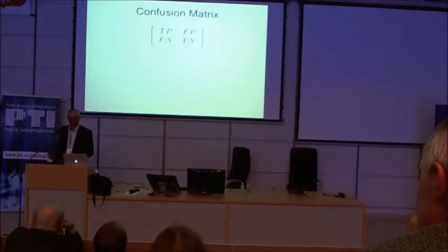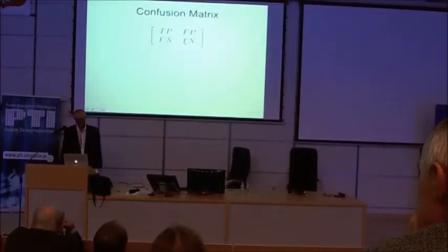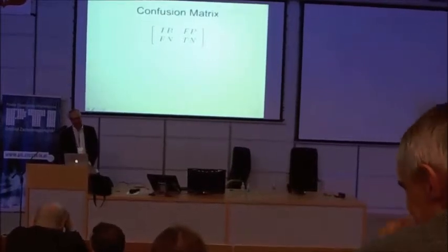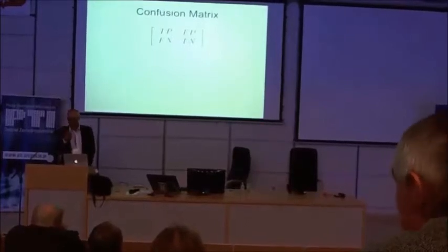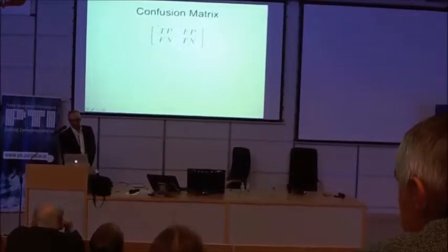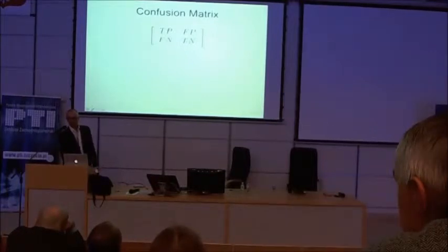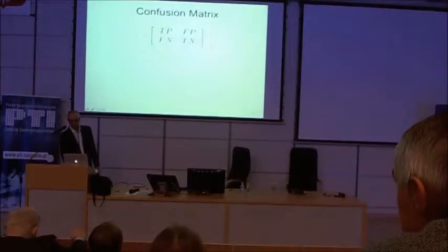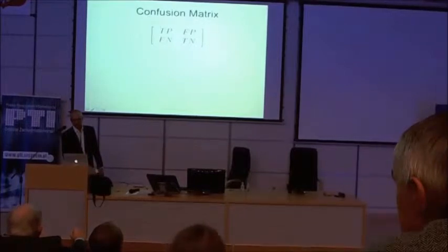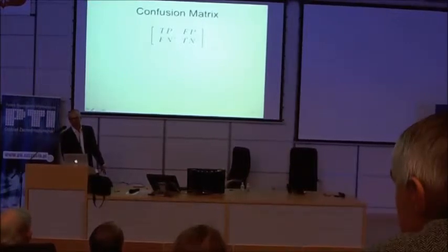Let's deal with the diagonals — these are the simple cases. If I say it's fault-prone and I'm right, then it's a true positive. If I say it's not fault-prone and it isn't, then it's a true negative. That's the ideal — if my prediction system is working well, we'll have very high counts in that diagonal. If I'm making mistakes, I'll be on the opposite diagonal: if I say it's fault-prone and it's not, that's a false positive; and if I say it's not fault-prone and it is, then it's a false negative.